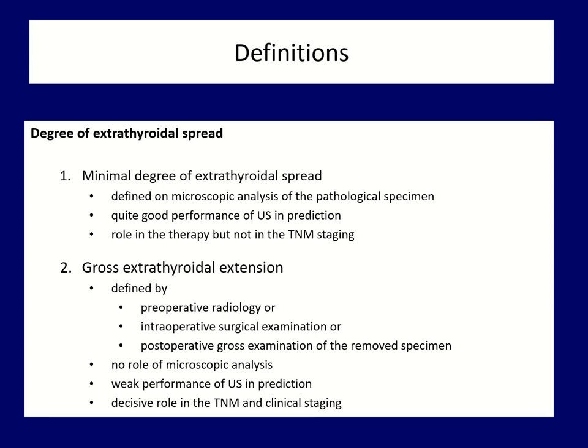Gross extra-thyroidal extension can be diagnosed either by preoperative radiology — ultrasound, MRI, or CT scan — or by visual judgment of the tumor intraoperatively by the surgeon, or by visual judgment of the specimen postoperatively by the histopathologist. If any of these three colleagues diagnose gross extra-thyroidal extension, then the existence of ETE should be treated as a fact. This cannot be overwritten by a microscopic analysis because the latter has no role in its determination.